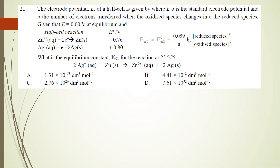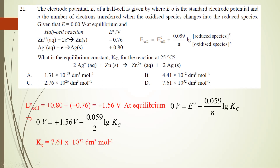So the reaction is: 2Ag+ + Zn gives Zn2+ + 2Ag. First, calculate the E naught cell: positive 0.8 minus negative 0.76 gives positive 1.56 V. At equilibrium, substitute into the Gibbs equation: 0 = E naught minus 0.059/N × log Kc. So 0 = positive 1.56 minus 0.059/N × log Kc. At the end, Kc = 7.61 × 10^52 dm³ per mol.